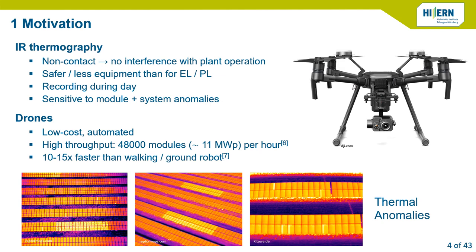IR thermography is safer and doesn't interfere with plant operation. It allows recording during daytime because we need a strong solar irradiance of about 600 watts per square meter. You don't have to record during the night as for EL or PL, so you don't need to pay nighttime surcharges or get special work permits for night operation. Infrared thermography is also sensitive to both module and system anomalies — anomalies affecting individual modules but also entire parts of the plant like strings or arrays.